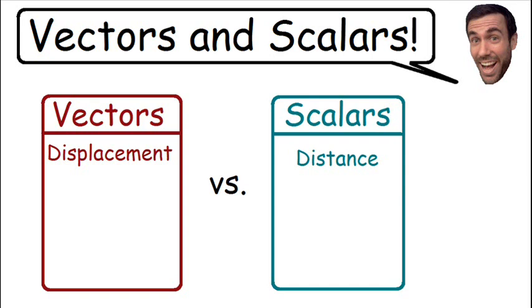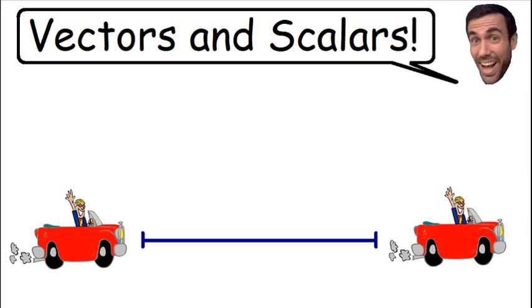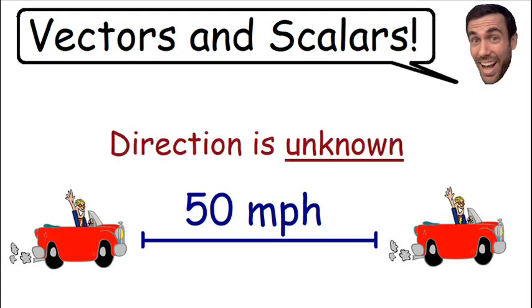Another common scalar quantity is speed. If we say a car is traveling at a speed of 50 miles per hour then we do know the magnitude of how fast the car is going but we do not know the direction which the car is going. So because we know the magnitude and we don't know the direction, this is why speed is a scalar quantity.